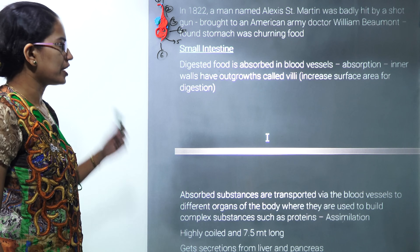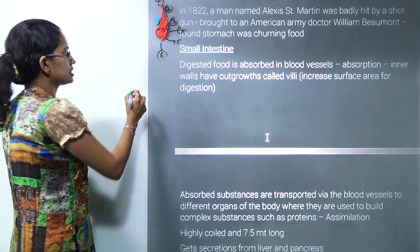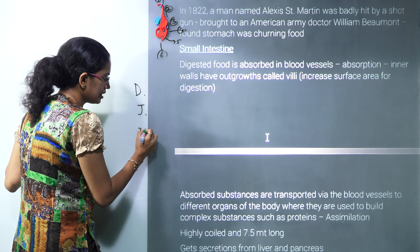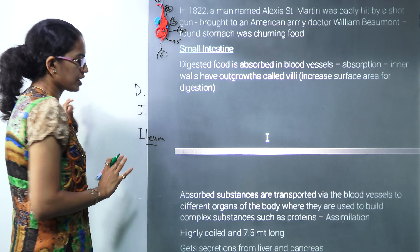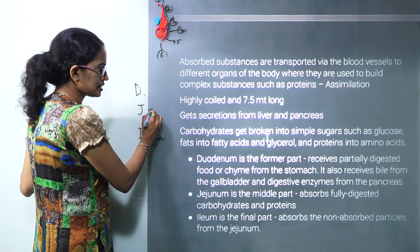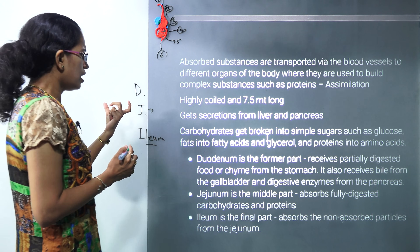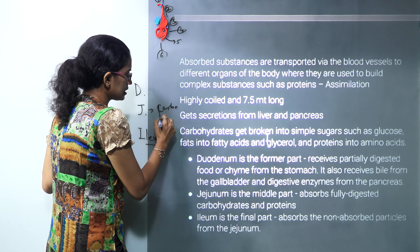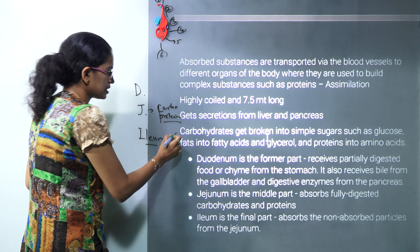Next is the small intestine, where digested food is absorbed into blood vessels. The small intestine is divided into three parts: the duodenum (first part), jejunum (middle part), and ileum (last part). In the jejunum, villi are present, and carbohydrates and proteins are fully absorbed here. Whatever remains unabsorbed is absorbed in the ileum.